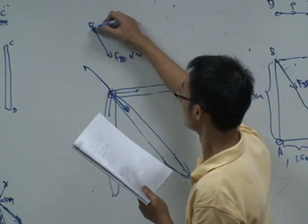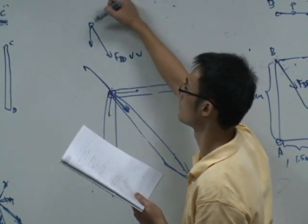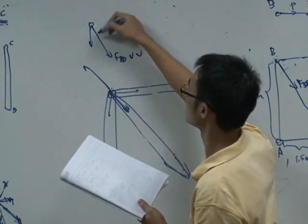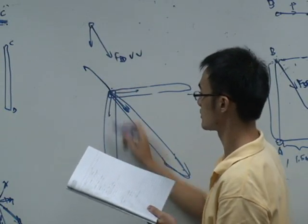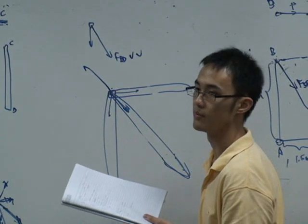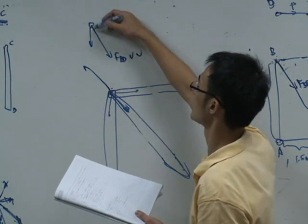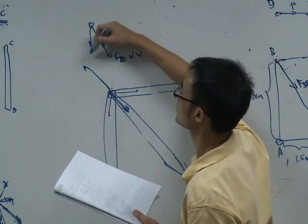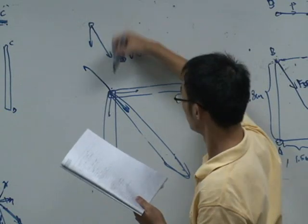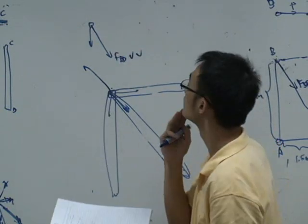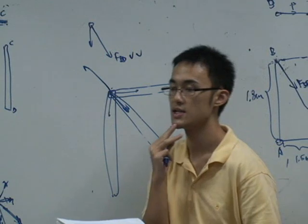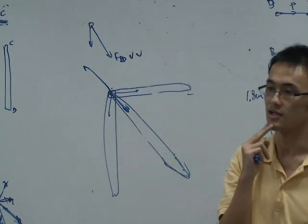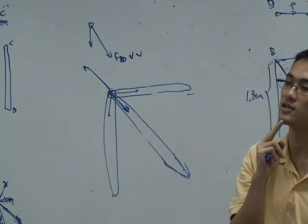For this link, we also have forces from member BA. Maybe going down or going upwards, but it's definitely in axial direction as this is a two-force member. So it must be in axial direction. We assume it is going down first.